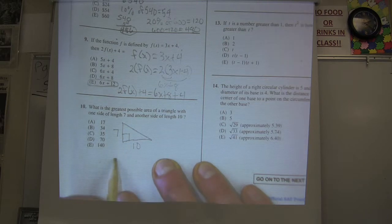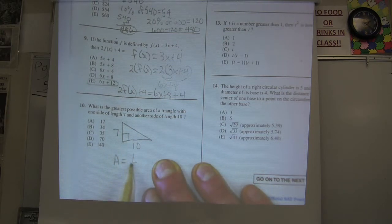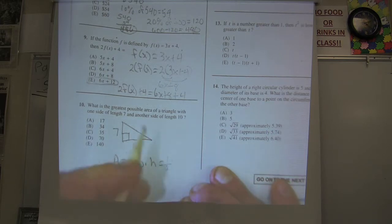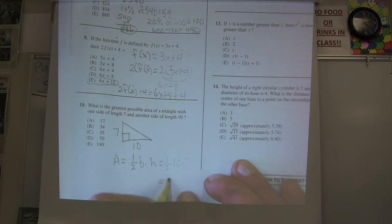So remember the area of a triangle, area of a triangle is one half base times height. In this case it's going to be one half, 10 times 7. And I get 35.